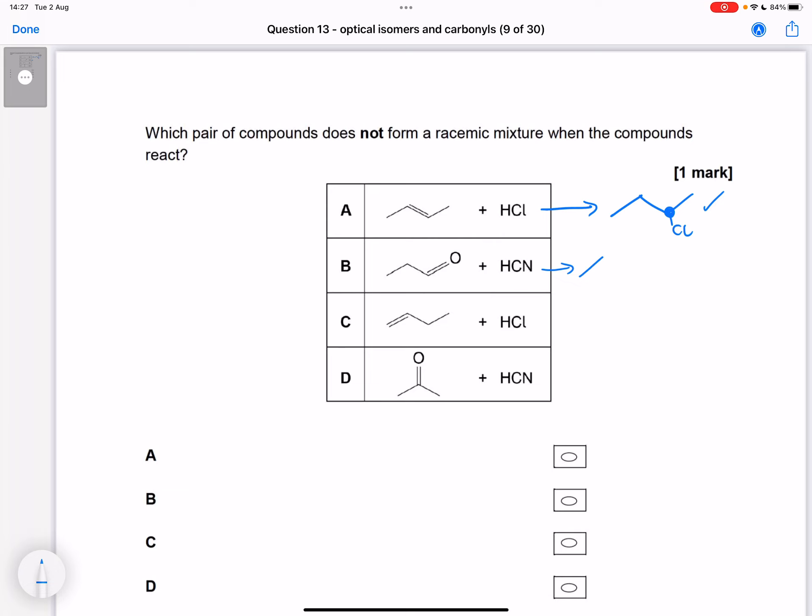Here, if we react an aldehyde with HCN, we get nucleophilic addition. And we can see here we've got a chiral carbon, so this would give us a racemic mixture.